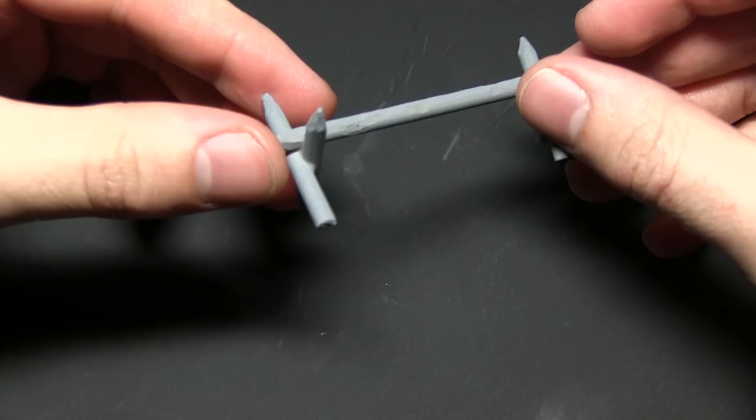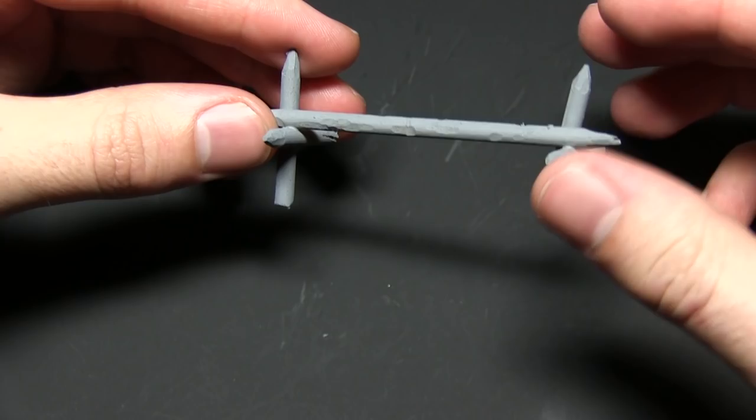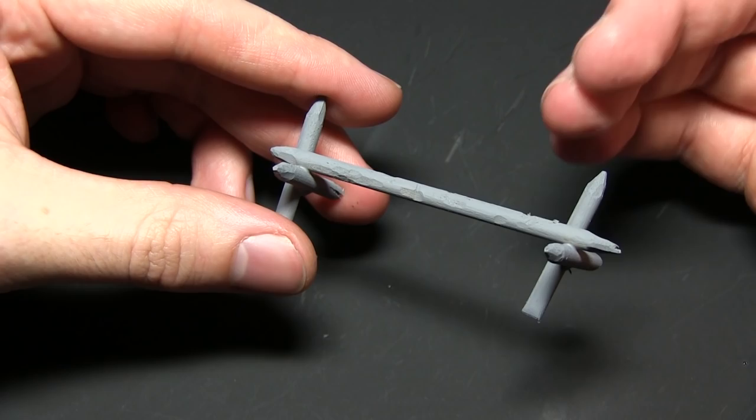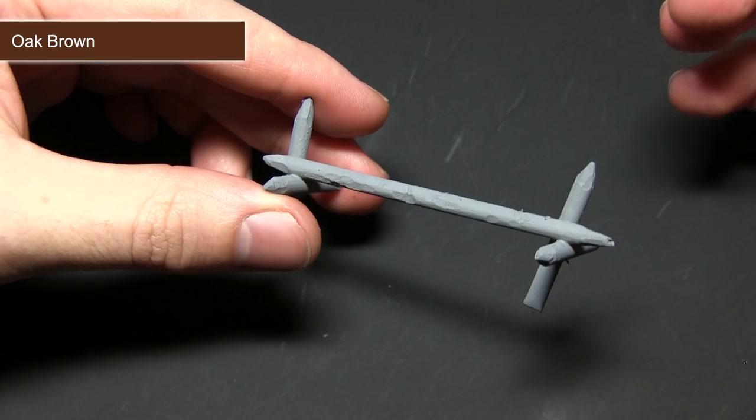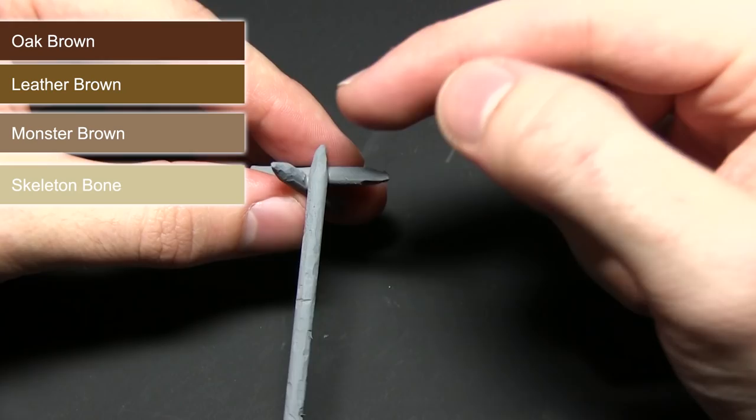I have primed my barricade with a grey spray primer. You want to use grey, black, or brown to make the next painting steps easier. I'll be starting off with a dark brown paint, notably Army Painter's Oak Brown. Then I'll build up the layers by dry brushing: first leather brown, then monster brown, then skeleton bone to pick out the shaven points.